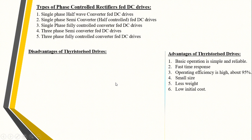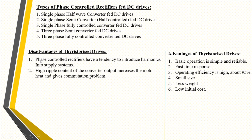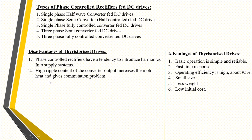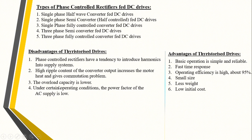The disadvantages of thyristorized drives are as follows. First, phase-controlled rectifiers have a tendency to introduce harmonics into the supply system — harmonics meaning distortions in the sinusoidal waveform of the AC supply voltage. Second, high ripple content of the converter output increases motor heat and causes commutation problems; commutation is the process of turning off the thyristor or SCR switch. Third, the overload capacity is lower. Fourth, under certain operating conditions, the power factor of the AC supply is low.